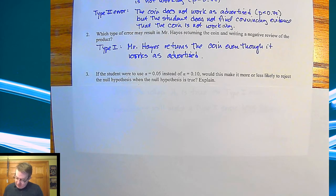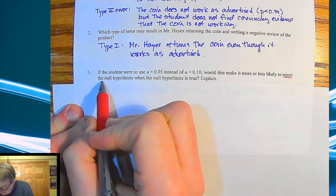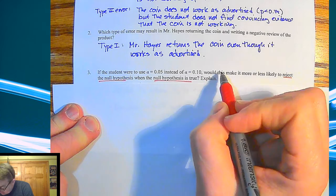Okay. If the student were to use an alpha value of 0.05 instead of an alpha value of 10%, would this make it more likely or less likely to reject the null hypothesis when the null hypothesis is true?